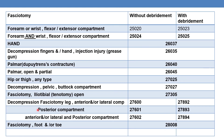For decompression fasciotomy of the leg, anterior and/or lateral compartments: without debridement, report 27600; with debridement, report 27892. For the posterior compartment: without debridement, report 27601; with debridement, report 27893. For fasciotomy of the leg including anterior/lateral and posterior compartments (all three): without debridement, report 27602; with debridement, report 27894.